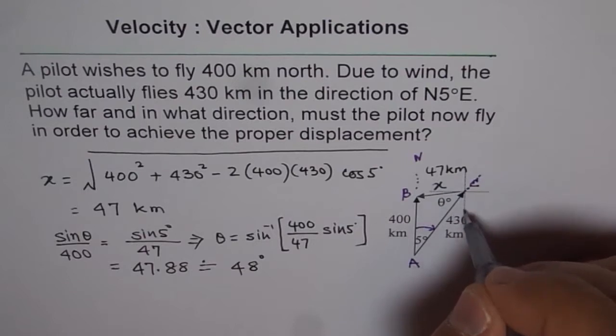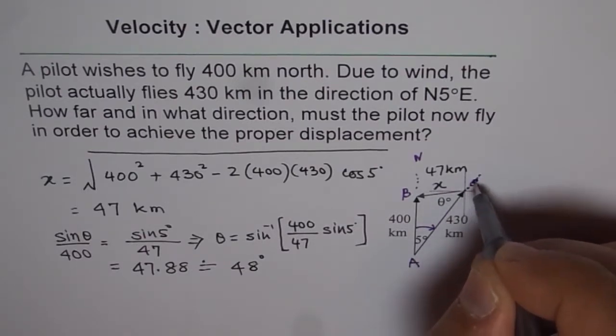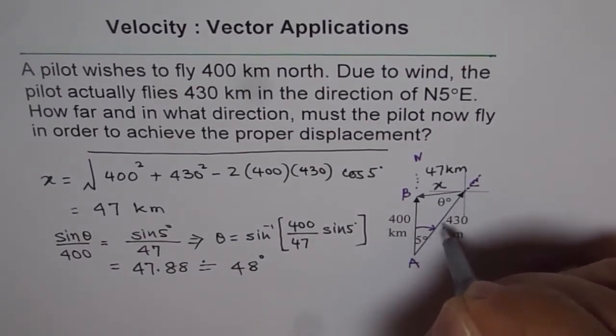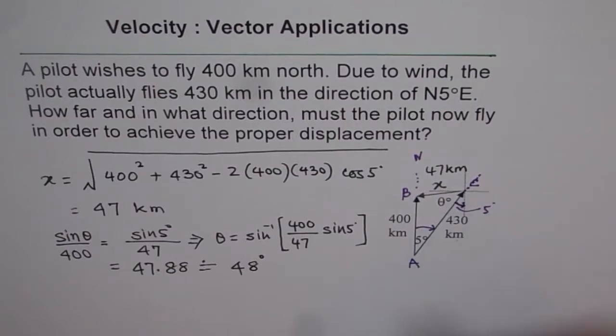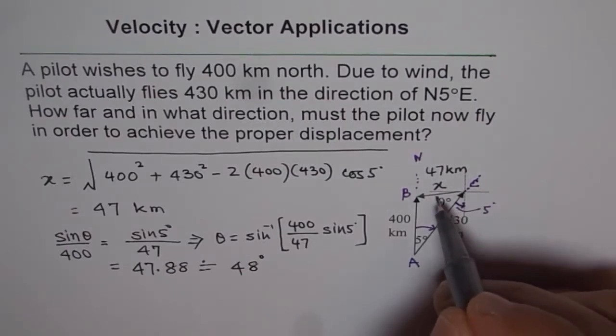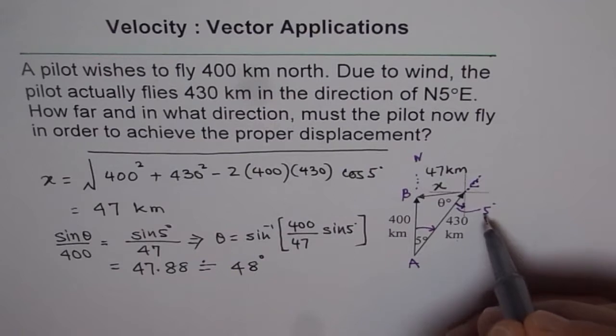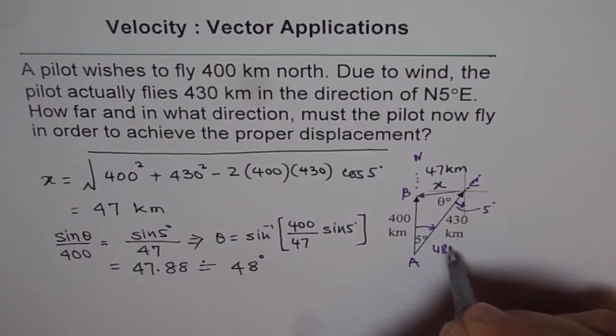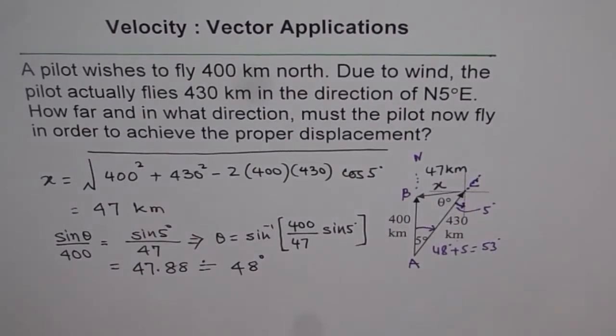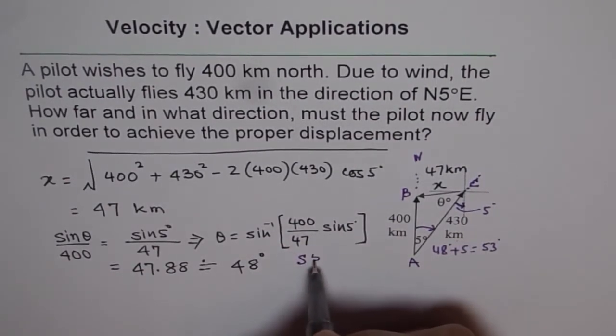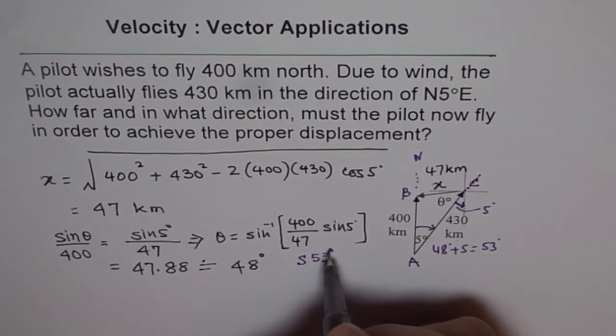If I extend this here, in this triangle, what is the angle from the horizontal? We can say from south how much west it is. If you see, this is north. These two lines are parallel. This becomes a transverse line. Therefore, if this is 5 degrees, this is also 5 degrees. If you see from south towards west, then it becomes 48 plus 5, which is 53 degrees.